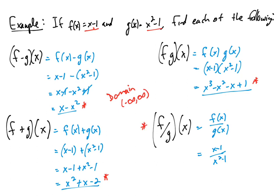f divided by g we need to be careful of, though, because we start with two polynomials f and g, but when we divide those, that becomes a rational function. So to find the domain of this, we need to figure out when the denominator is equal to 0. So the denominator is equal to 0 when x is equal to 1 or negative 1. So x cannot be 1 or negative 1.